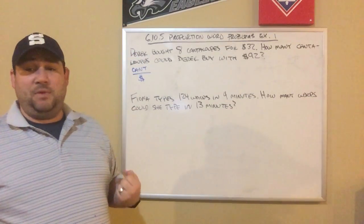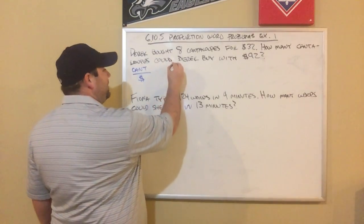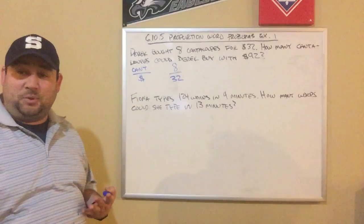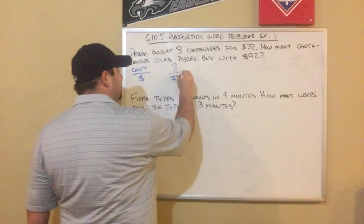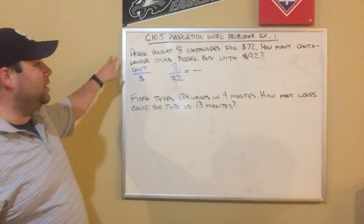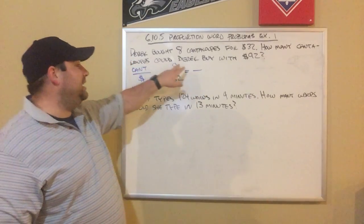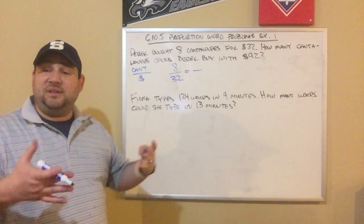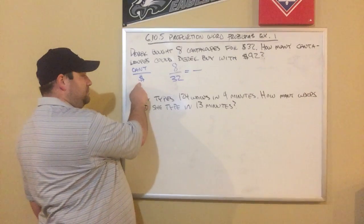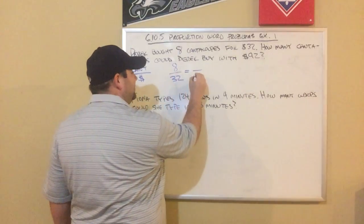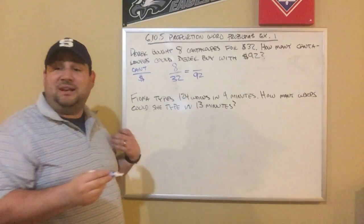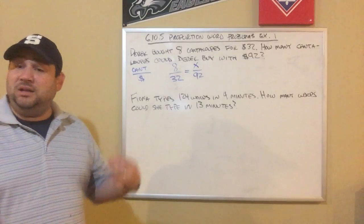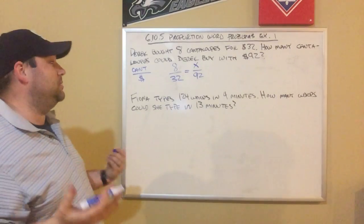So cantaloupes on top and money on the bottom. When he buys eight cantaloupes, it costs $32 — so that's half of my proportion. Then the question asks how many cantaloupes could Derek buy with $92? I know he has $92, so I put 92 on the bottom. How many cantaloupes can he buy? I don't know — that's what I'm trying to figure out, so I'm going to call that x, my unknown variable.